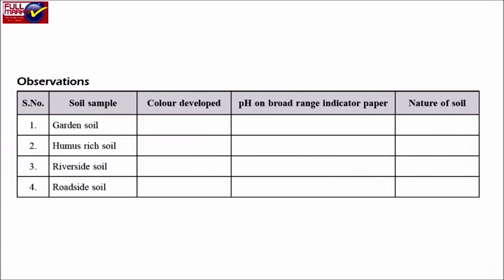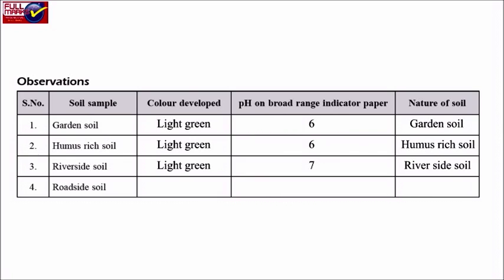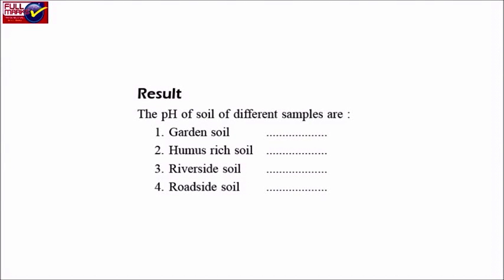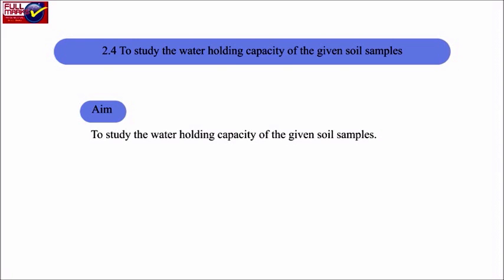Observations and Result: The pH of soil of different samples - garden soil, humus-rich soil, riverside soil, and roadside soil. 2.4 To study the water holding capacity of the given soil samples. AIM: To study the water holding capacity of the given soil samples.